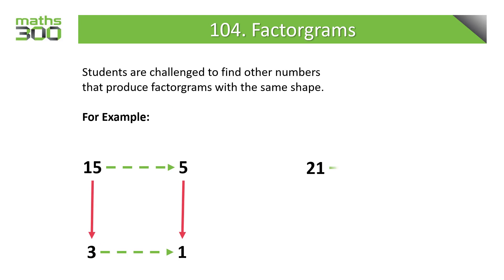Students are challenged to find other numbers that produce factorgrams with the same shape. Here we see that 21 divides by 3 to produce 7 and 21 divides by 7 to produce 3.